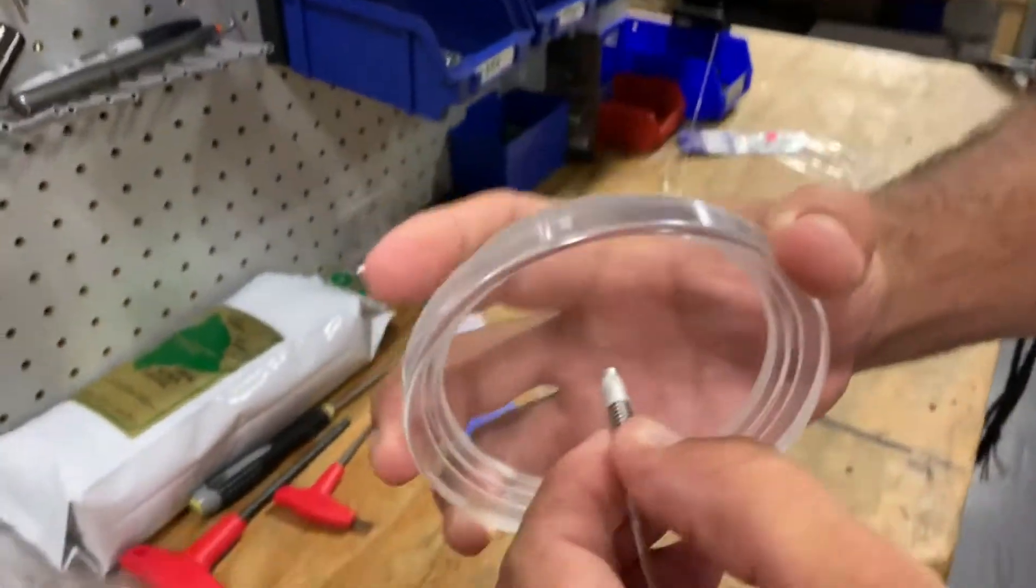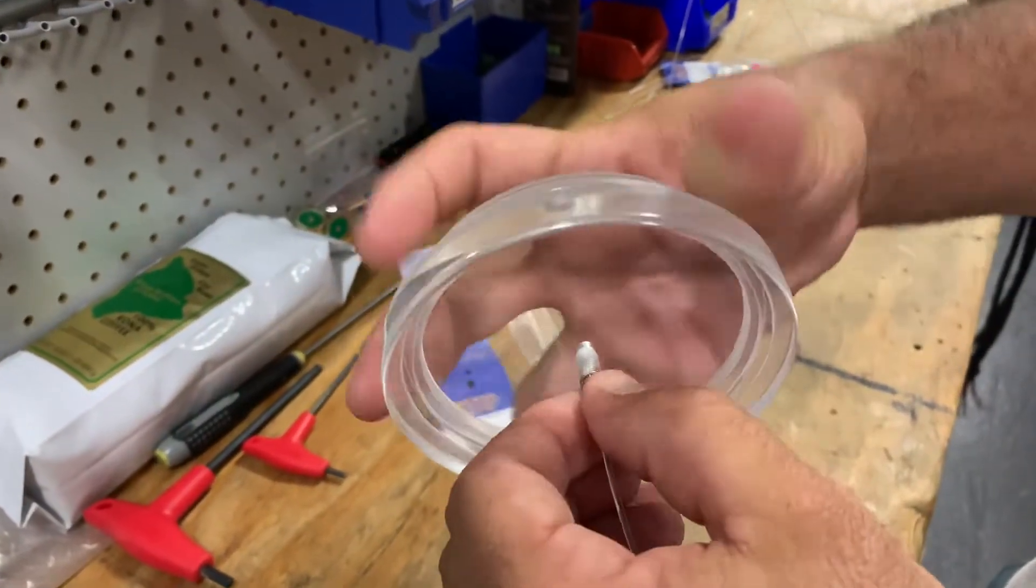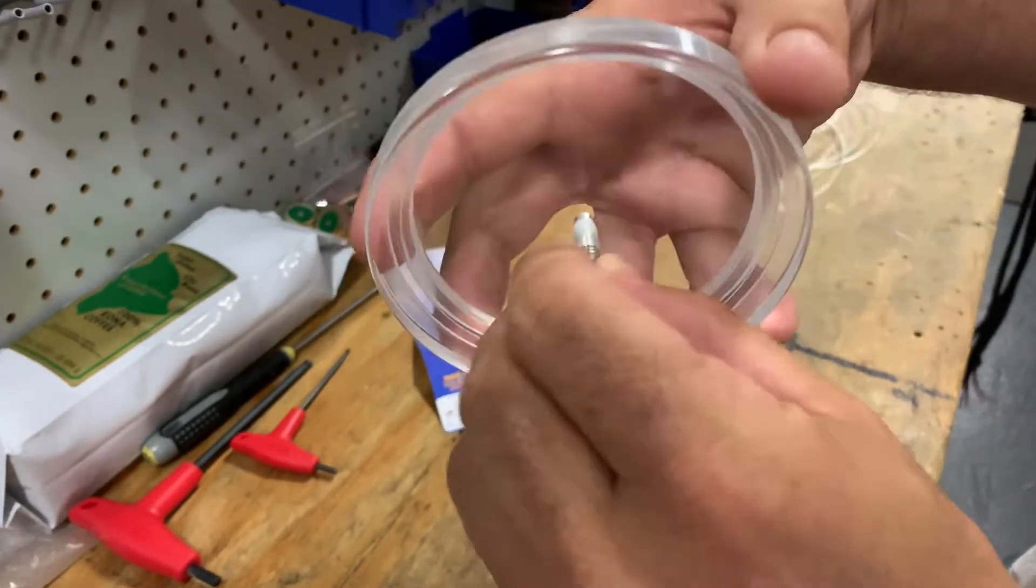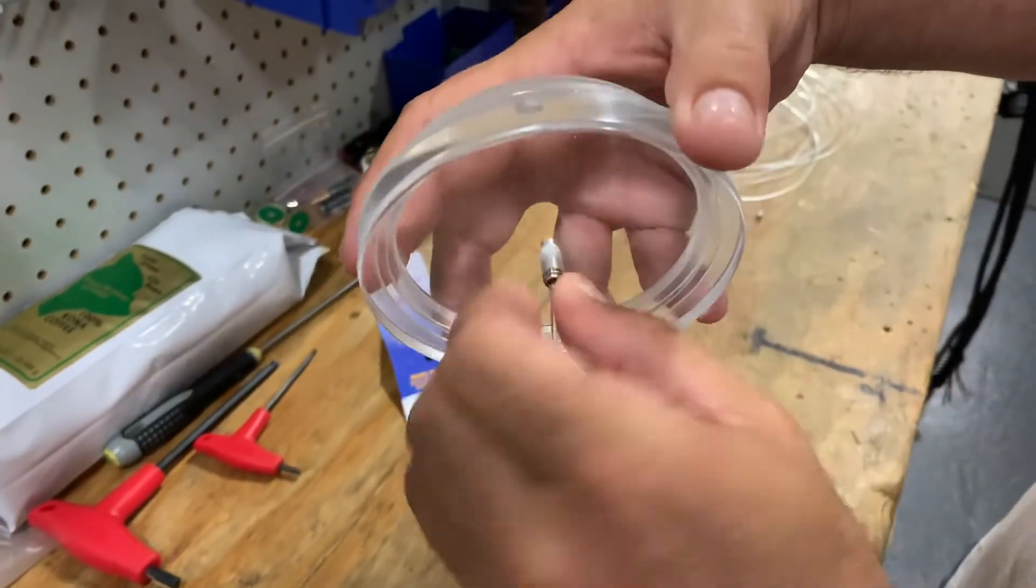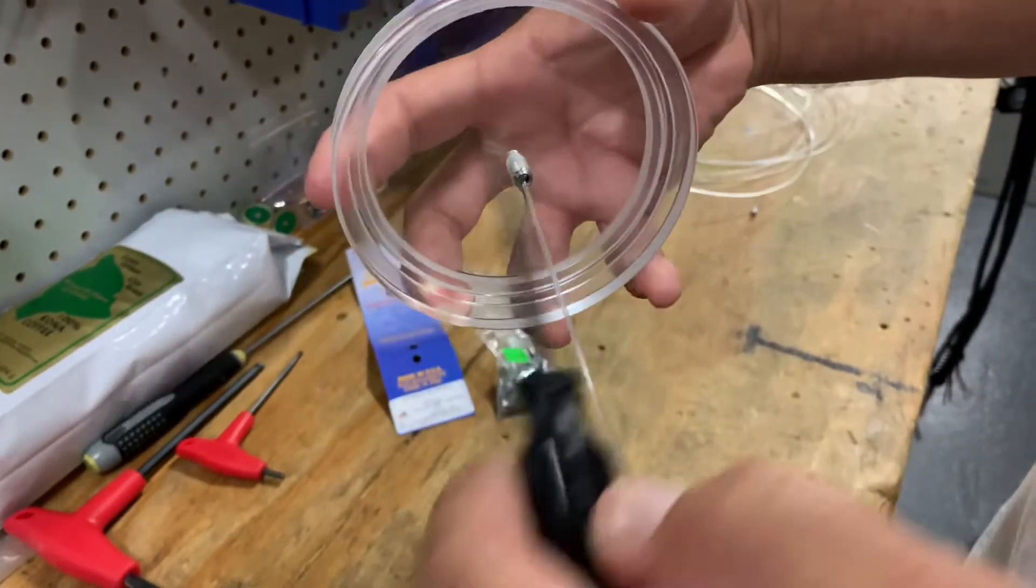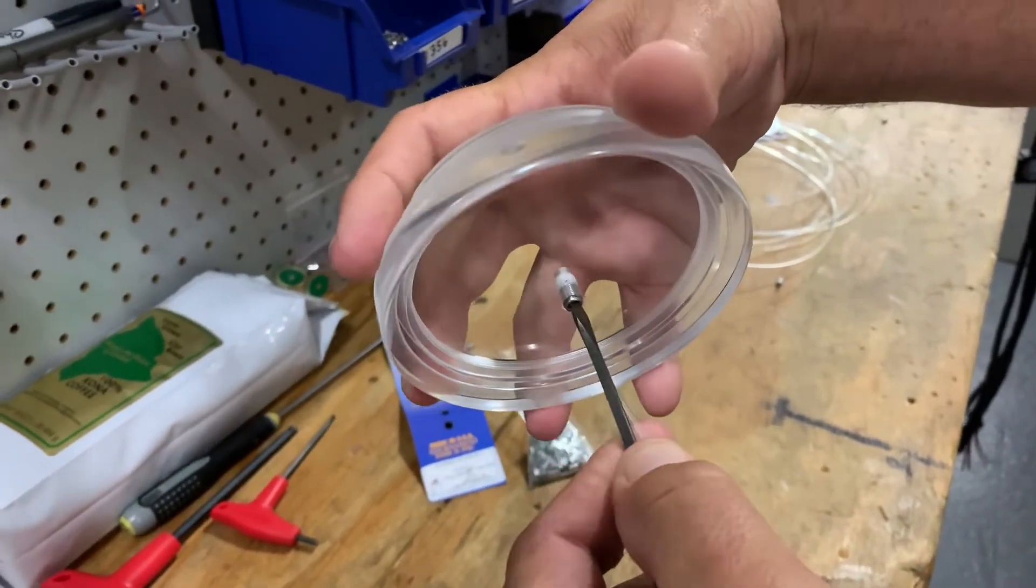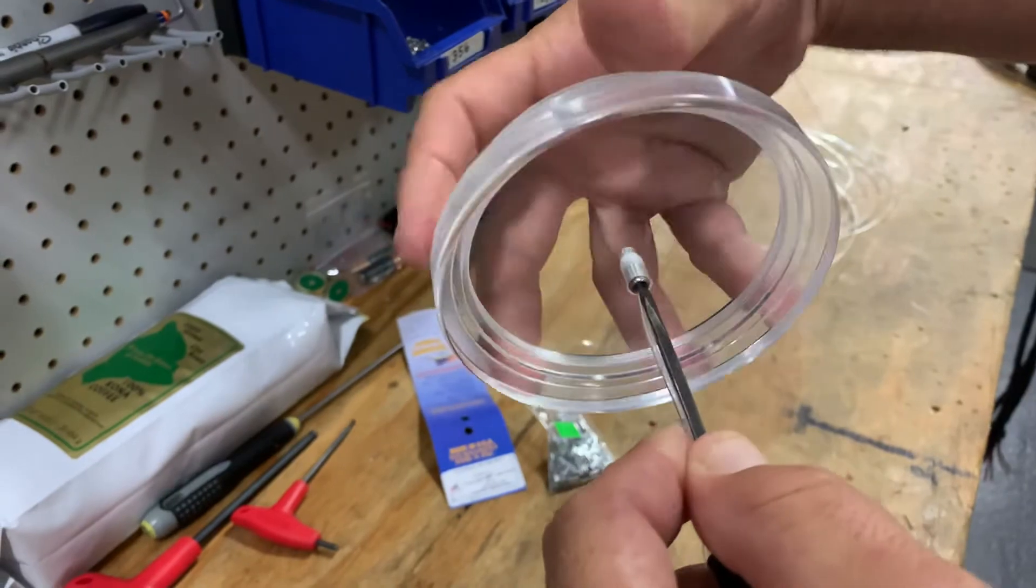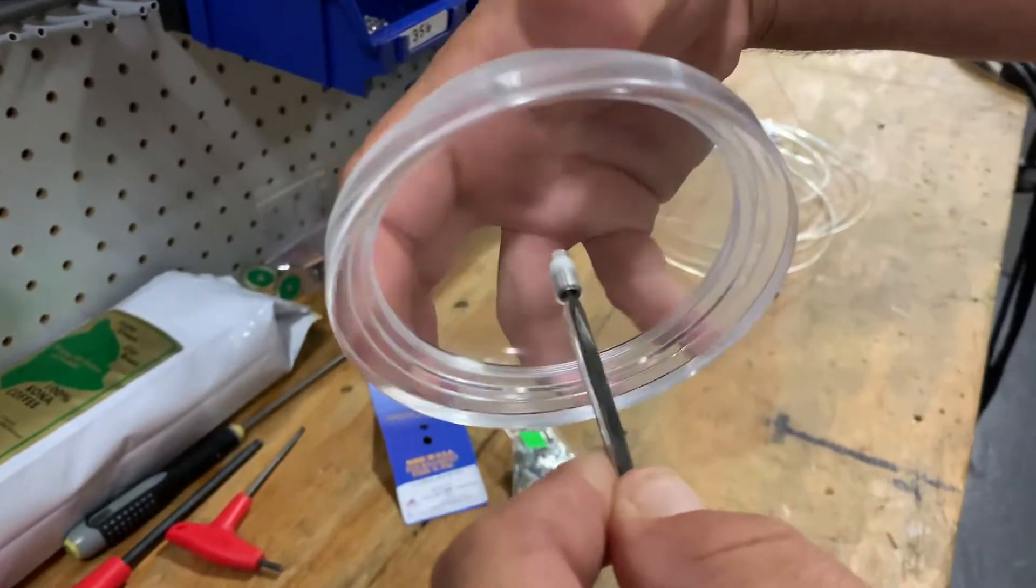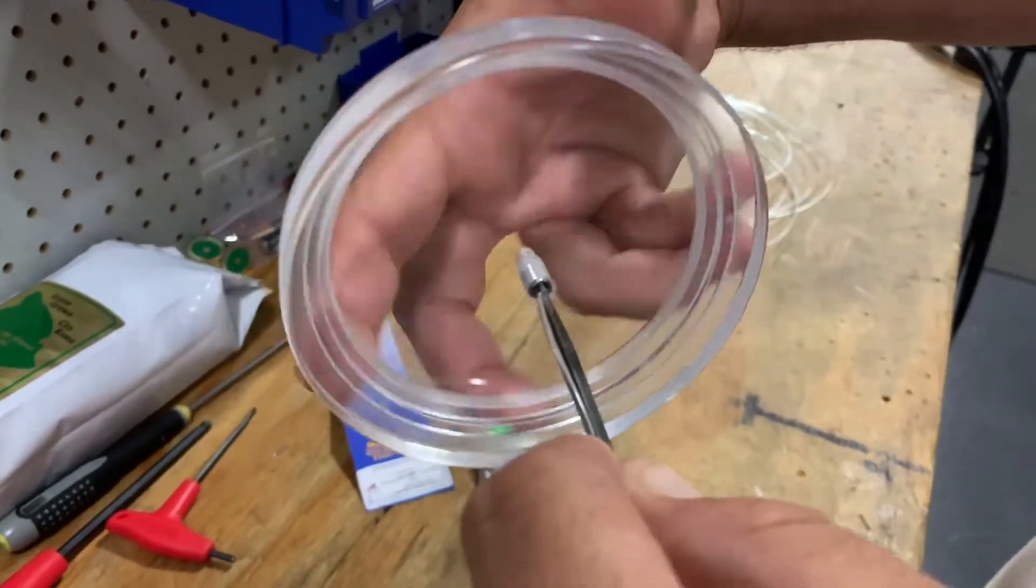Thread that right in and it doesn't need to be real tight, just snug. This is not gonna twist out. So again, you're gonna hold the mono right against the flathead and just spin until it's nice and tight.